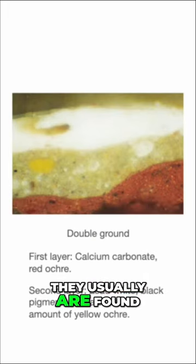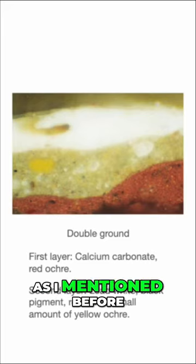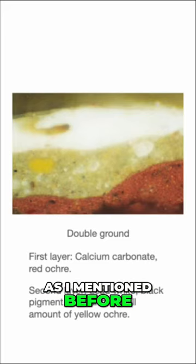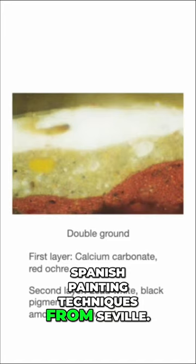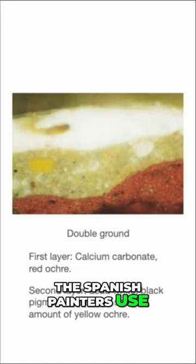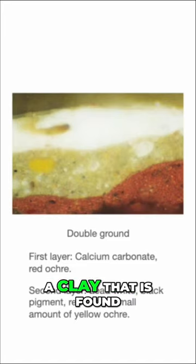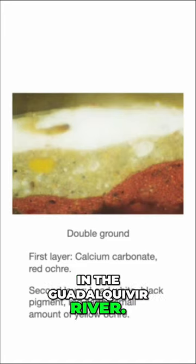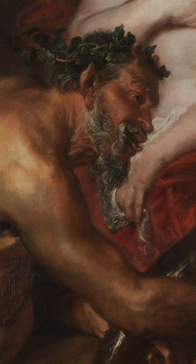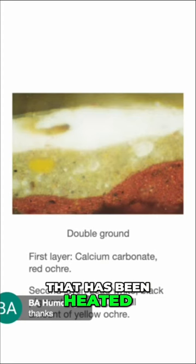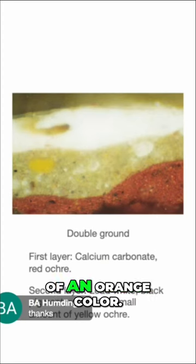They usually are found in the form of clays. As I mentioned before, when we cover Spanish painting techniques from Seville, the Spanish painters use a clay that is found in the Guadalquivir River. And painters from the north would have been using perhaps a pigment called English red, which is essentially a red ochre that has been heated and it turns into somewhat of an orange color.